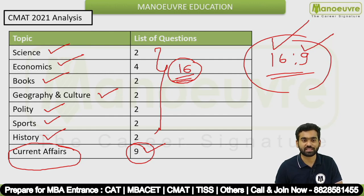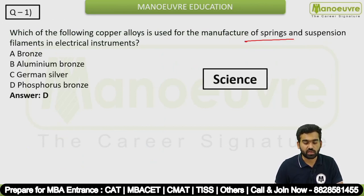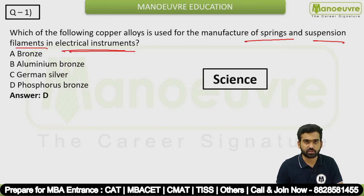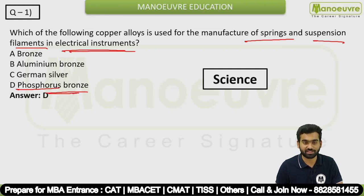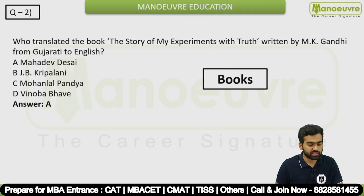Let's discuss each question in detail. Question 1: Which copper alloy is used for manufacturing springs, suspension filaments, and electrical instruments? The answer is Phosphorus Bronze. This is a science-related question.